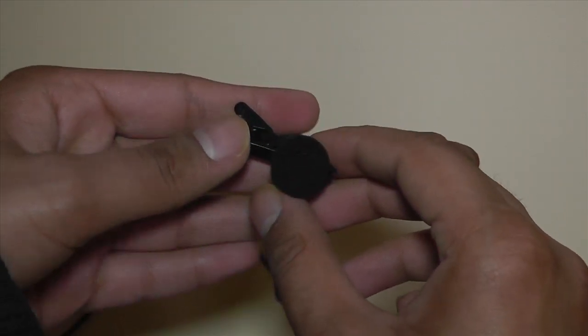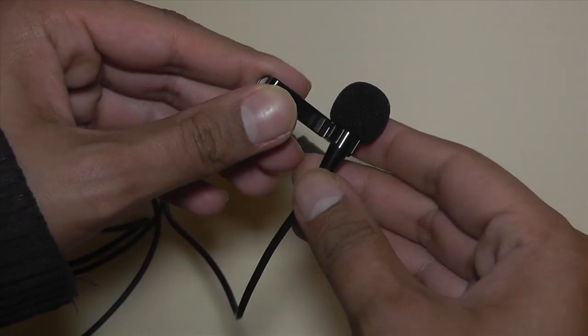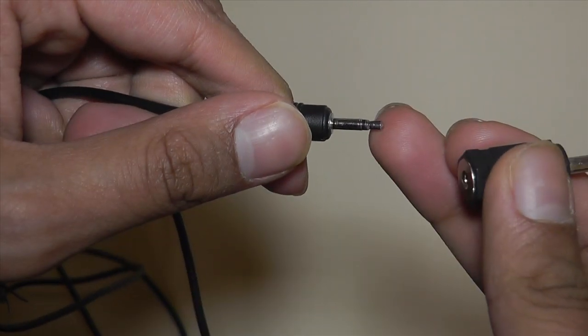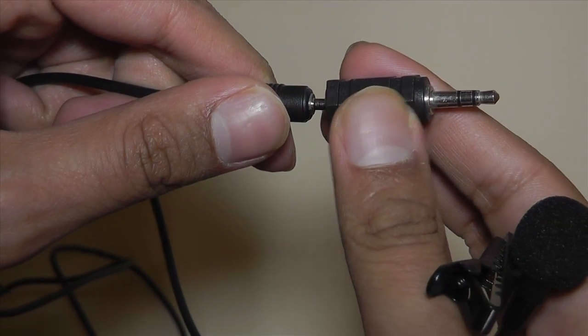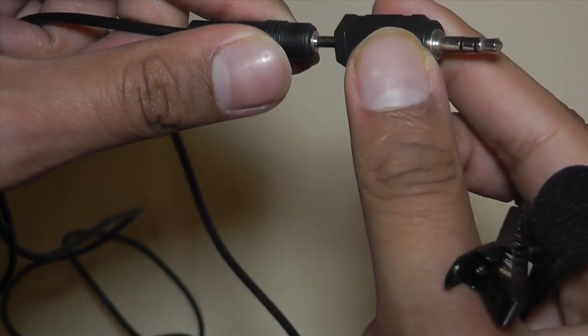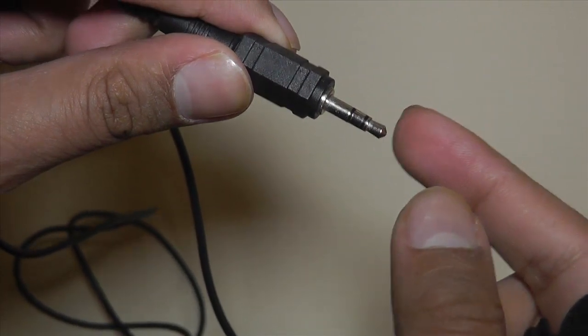This microphone will run you around about 17 to 20 pounds and it's an external microphone. As you can see I've got a little adapter right here. That's because this is a 2.5mm connector, and you need a 2.5mm to 3.5mm adapter, so now this will attach to a camera.